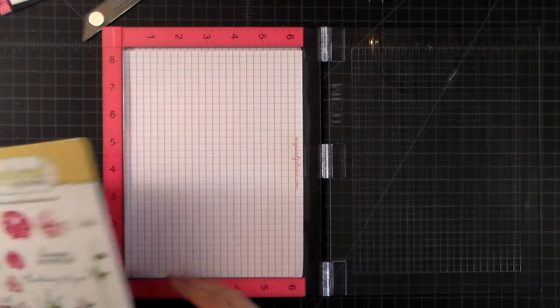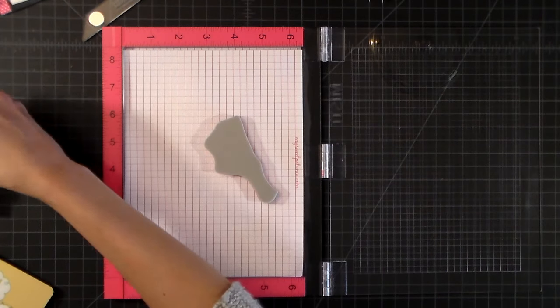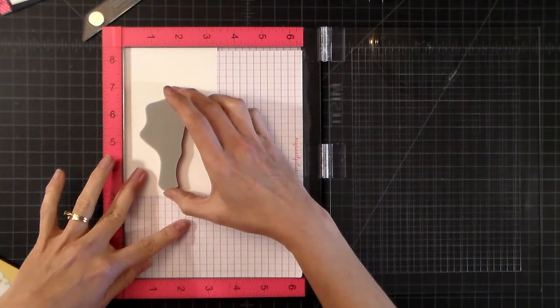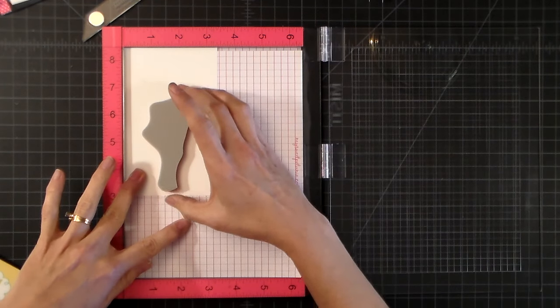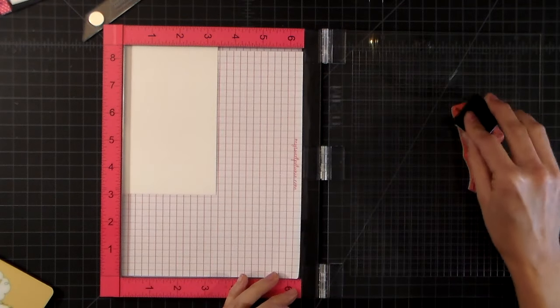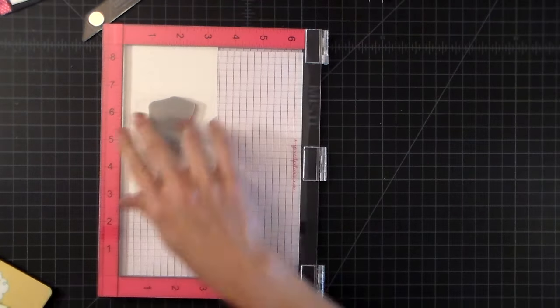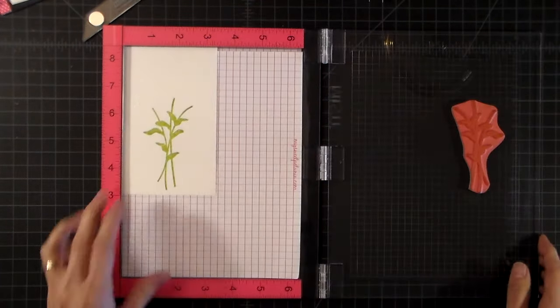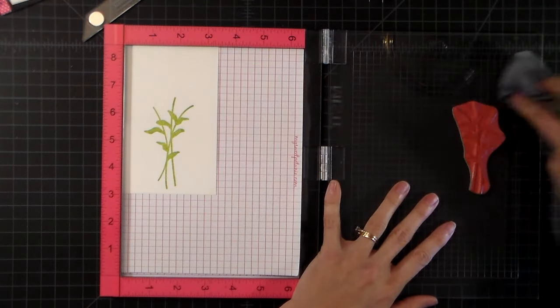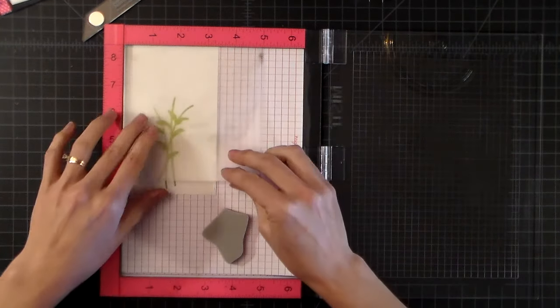I'm going to start by stamping the stems from the Simply Stamped Zinnia stamp set. I'm just going to position it onto my cardstock in the upper corner, and the reason why I'm using the upper corner is to position the second layer a little bit easier. I like to put my foam insert under the lid because then it's easier for me to pick up the lid.